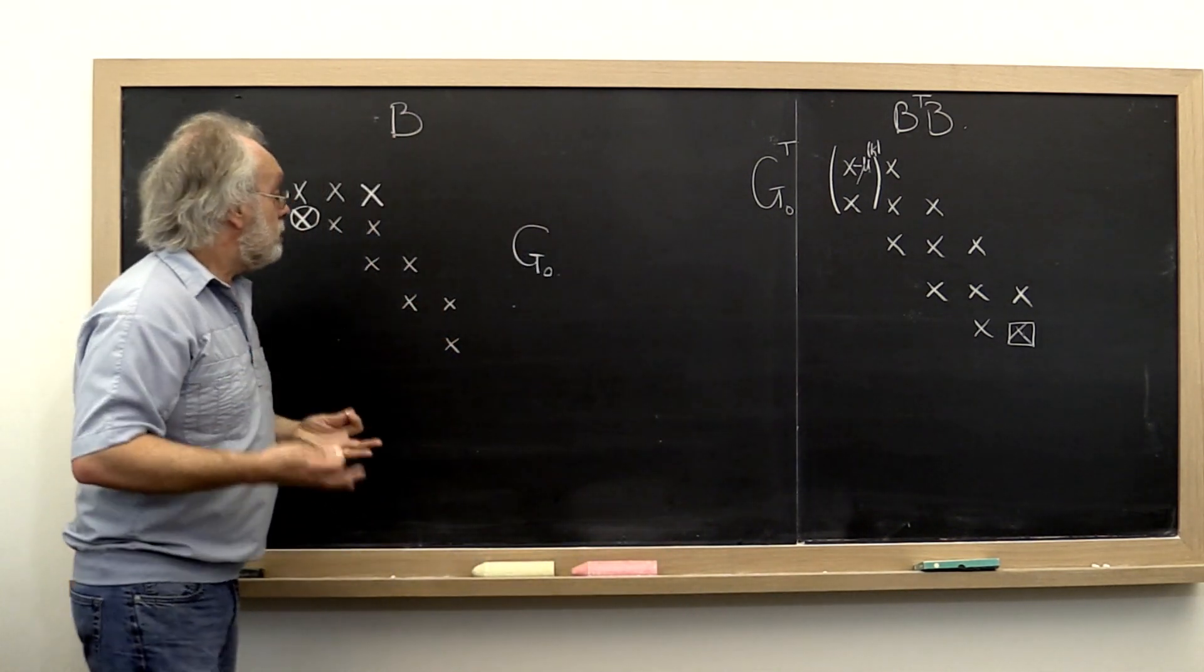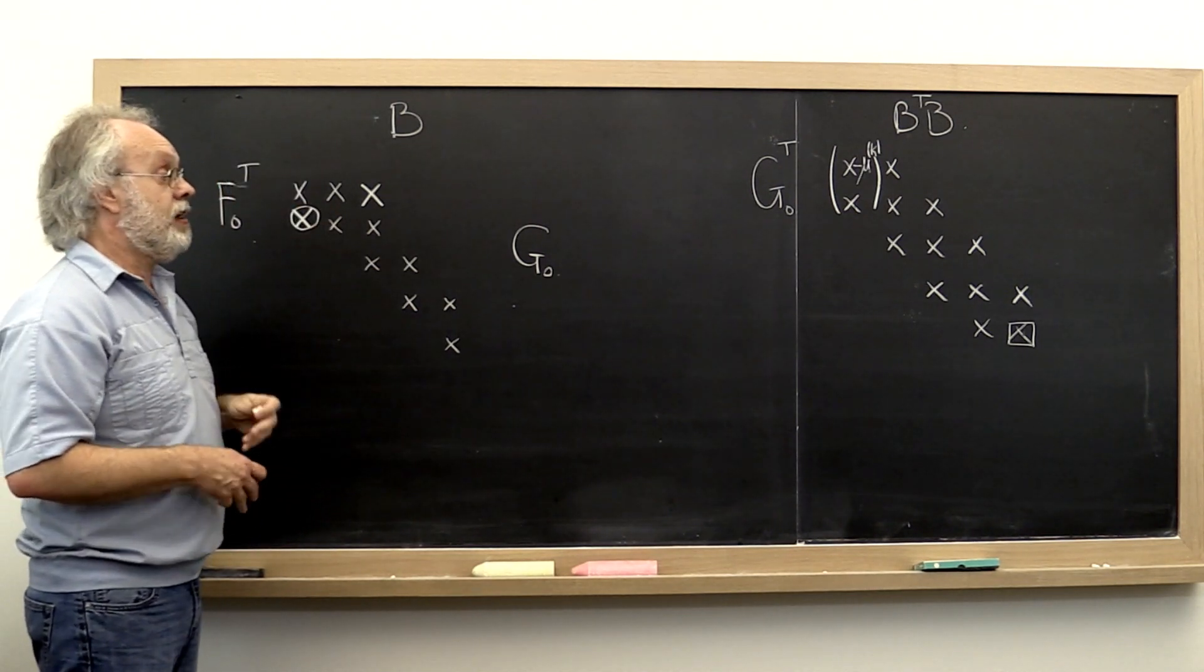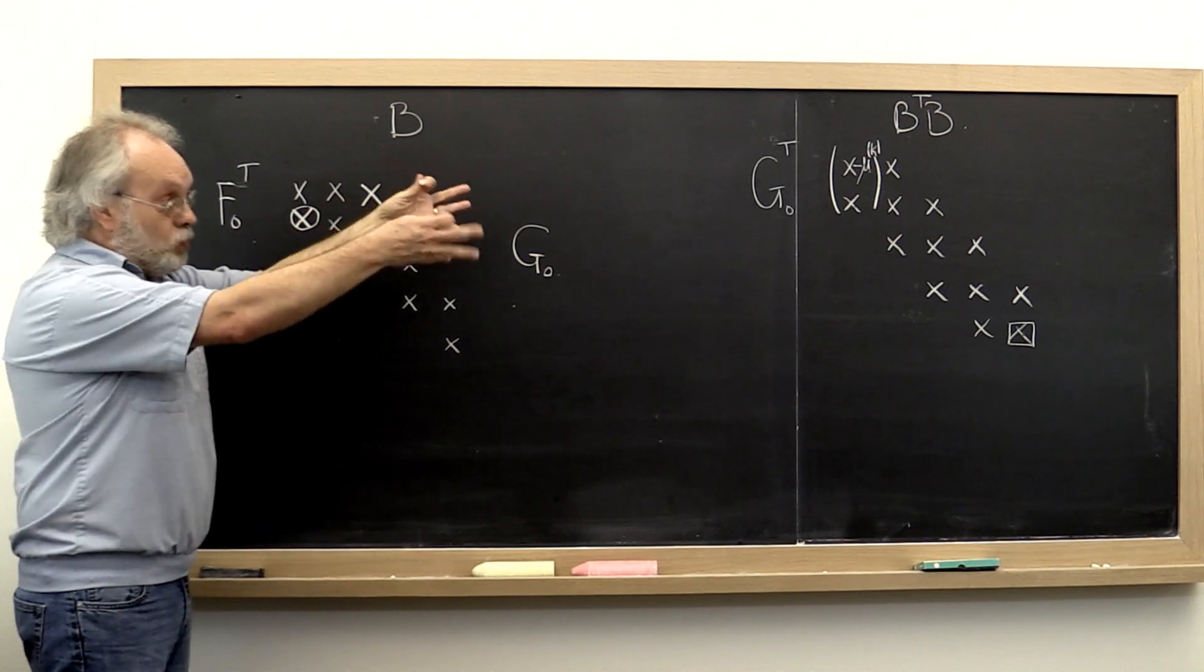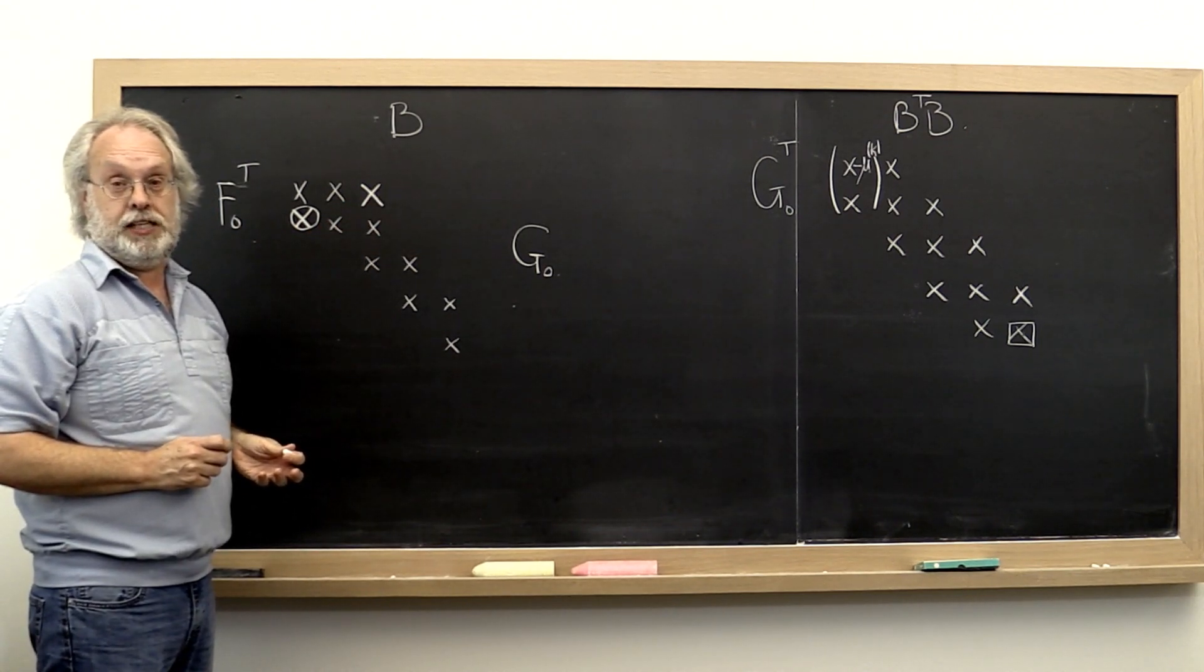The implicit Q theorem tells us then that's the exact same bidiagonal matrix that would correspond to the tridiagonal matrix. You get the point?